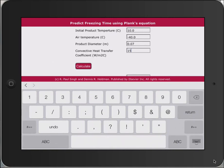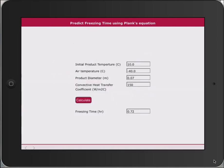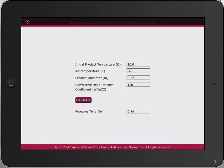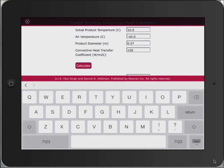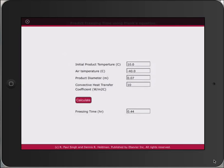And what if we decrease the convective heat transfer coefficient from 150 down to 10? That results in a much slower freezing process, taking almost 2.5 hours.